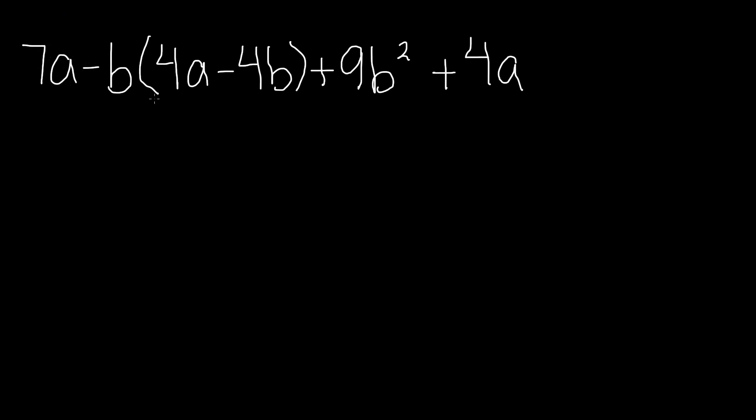This part of the expression is where we can apply distributive property. Negative b, parentheses, 4a minus 4b. First, let me just copy this term down, 7a. Now, we solve. We need to solve this using distributive property. So, we're going to multiply first negative b times 4a, and then we're going to multiply negative b times negative 4b. Negative b times 4a gives us negative 4ab. Negative b times negative 4b gives us positive 4b to the second power. Now we copy down the other terms, which are positive 9b to the second power plus 4a.